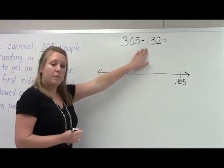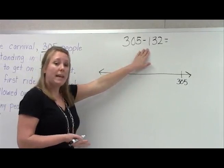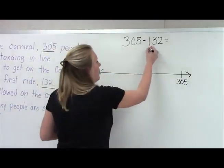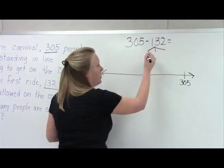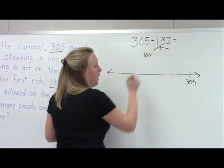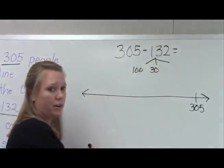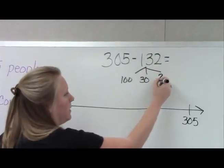Now this is the number that we're subtracting, but we want to decompose or break it down into our hundreds, our tens, and our ones. So I'm going to break apart 132 into 100, there's three tens so that makes it 30, and two ones, so that's 2.